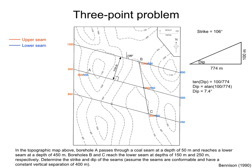We can use trigonometry to calculate the dip. The drop in elevation between two adjacent structure contours is 100 meters, and the distance between the structure contours along the dip direction is 774 meters. The dip is equal to the arc tangent of 100 divided by 774, or about 7 degrees. So the strike and dip of the seams in right-hand rule format is 106, 7.